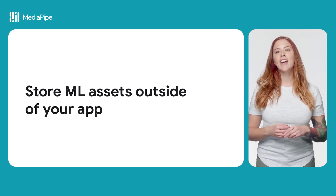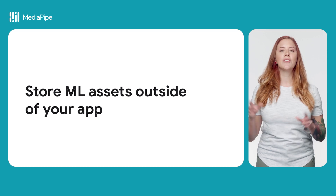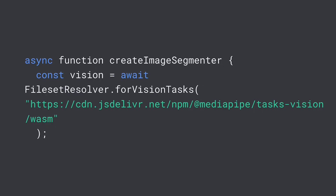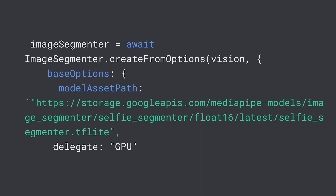Let's take a look at how to initialize the image segmenter using example code. Here, I have a function called createImageSegmenter. First, we configure our WASM binary loading using the FileSetResolver for vision tasks method. Then, we create the image segmenter using the ImageSegmenter createFromOptions method, passing the file set resolver you just created and the model.